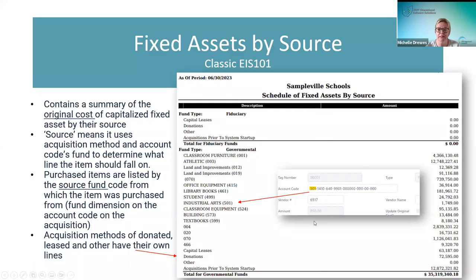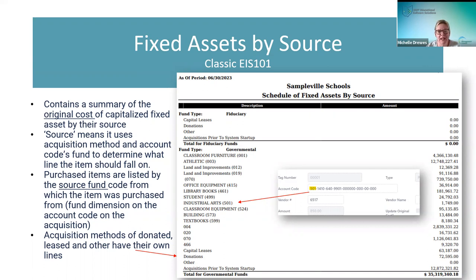Here is what the generated report looks like. All GAAP reports break it down by fund type: fiduciary, governmental, and proprietary if applicable. The Fixed Asset by Source — the key word here is 'source' — contains a summary of the original costs of all capital assets by their source, which is the acquisition method and the account code fund that was used. That information is pulled into this report.